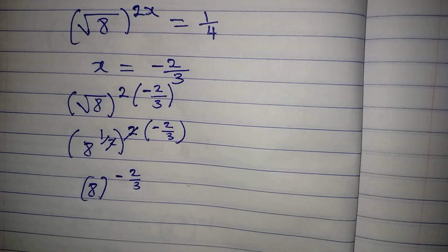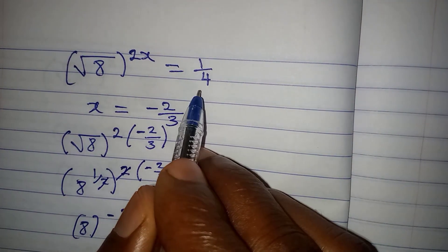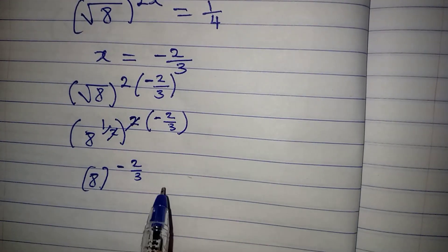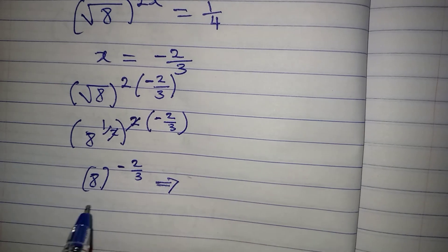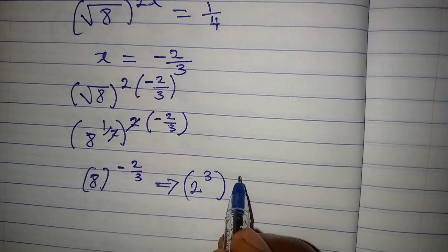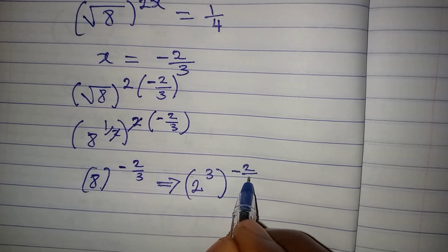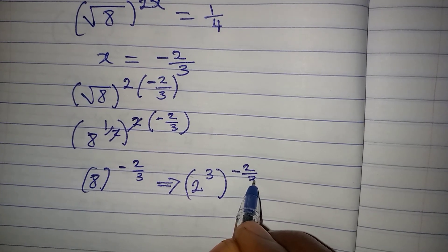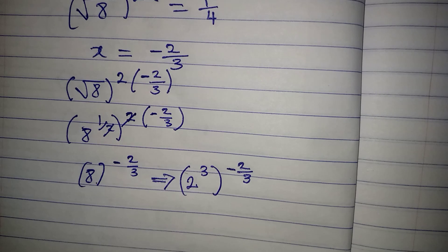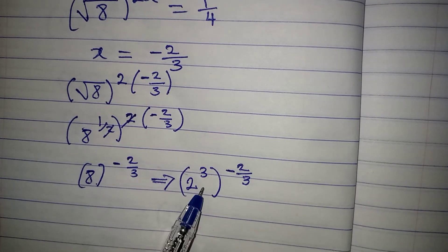And then, remember we are looking for 1 over 4. So now, to continue with this, this will imply that 2 to the power of 3 and then negative 2 over 3 is what we are having. Because 8 is 2 to the power of 3.